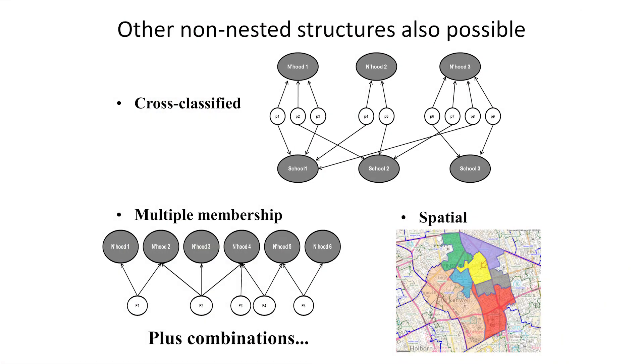We may also have a multiple membership structure, where individuals belong to more than one group. Or a more explicitly spatial structure, where we don't just want to account for similarities between people from the same area, but we also want to account for the similarities that exist between areas that are closer to one another. Or combinations of all three structures.